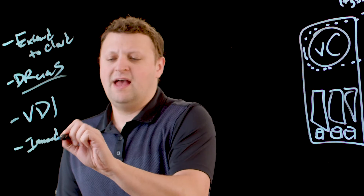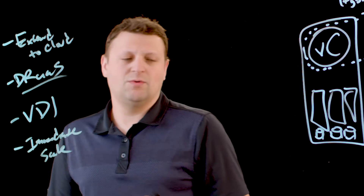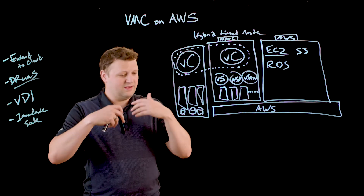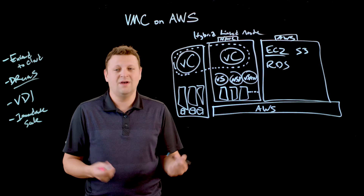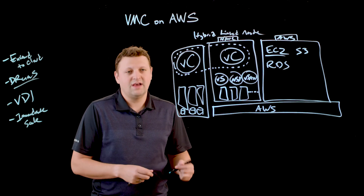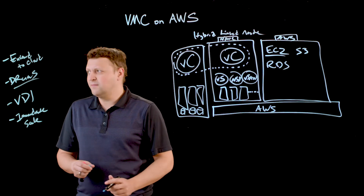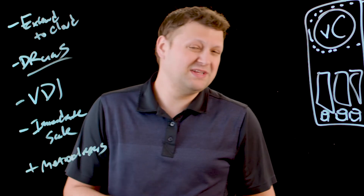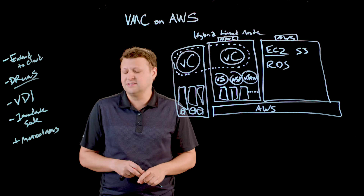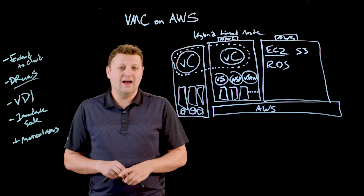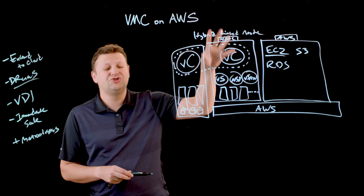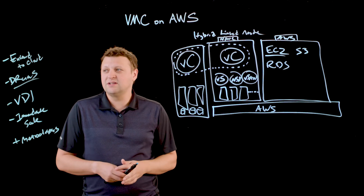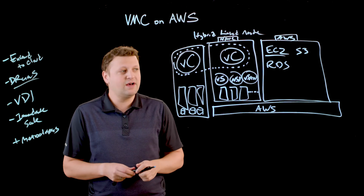We also see the ability to have immediate scale. When someone needs a scalable environment, one of the hardest questions is: how fast can things come through the door from a purchasing, requisition, racking, stacking, and connecting perspective? More often than not it's weeks instead of minutes — and that's the power of leveraging AWS global infrastructure. Finally, there's a bonus option: Metro Clusters, which are normally very difficult to do, requiring planning, design exercises, and quorum between multiple sites. VMware can do this natively even between VMware Cloud on AWS instances in different availability zones.